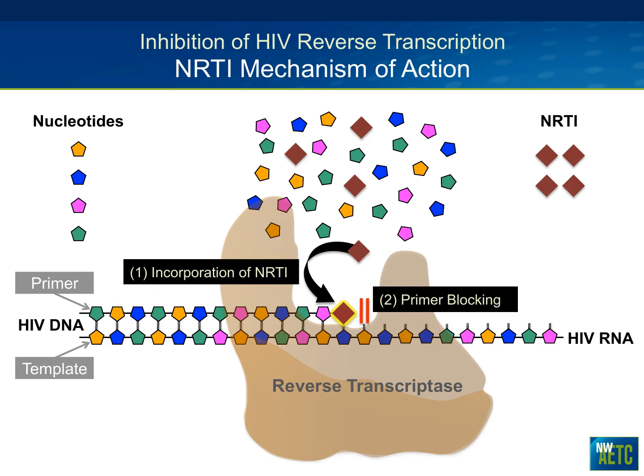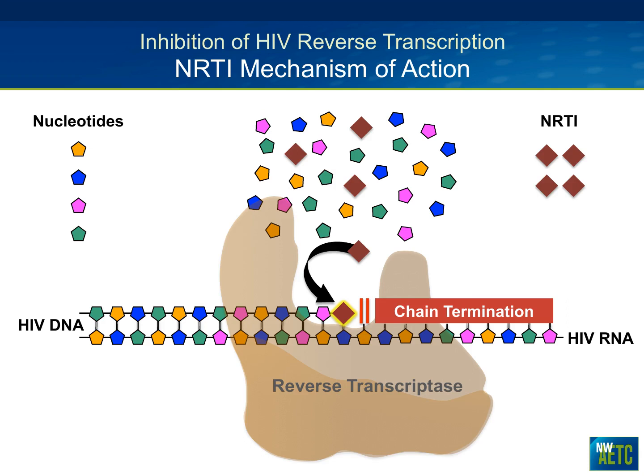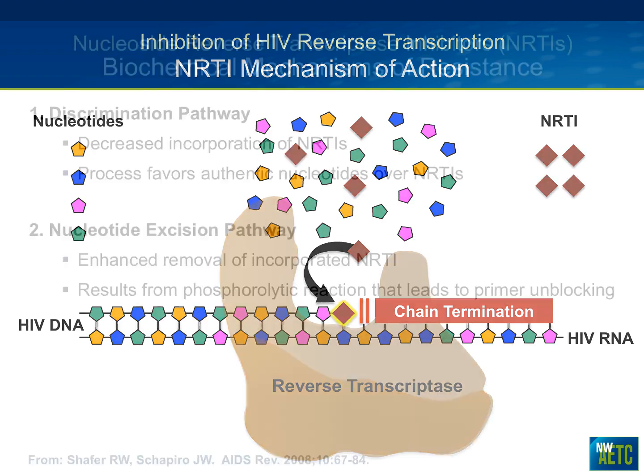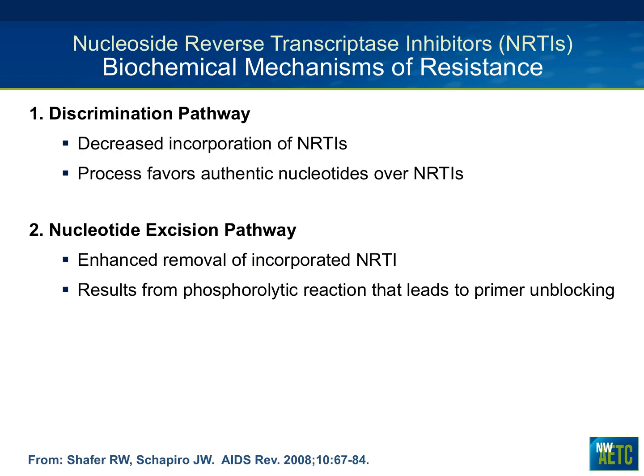The nucleoside reverse transcriptase inhibitor, shown in dark brown, is incorporated by the virus via reverse transcriptase, attaches onto the primer, and has a caboose-like effect where the three-prime hydroxyl end will not allow any elongation — we call this primer blocking. The result is chain termination and stoppage of HIV conversion of RNA to DNA. That is how NRTIs work.